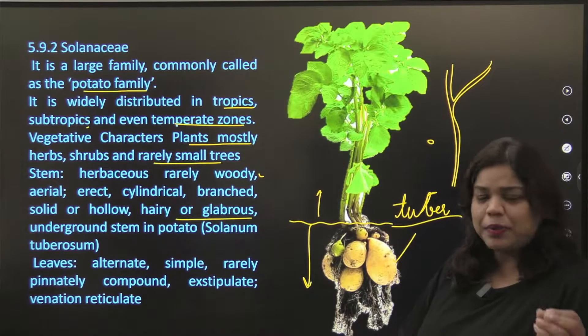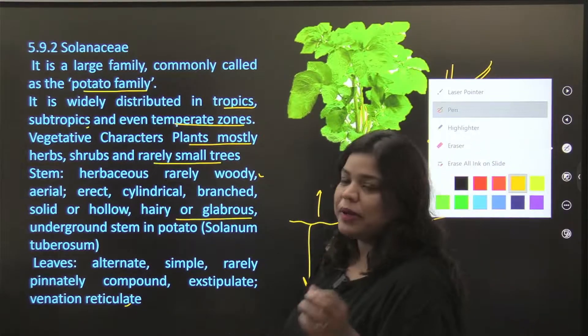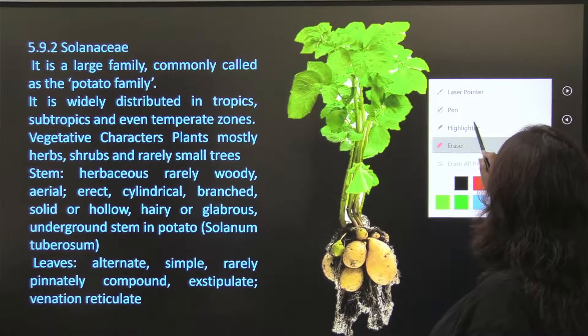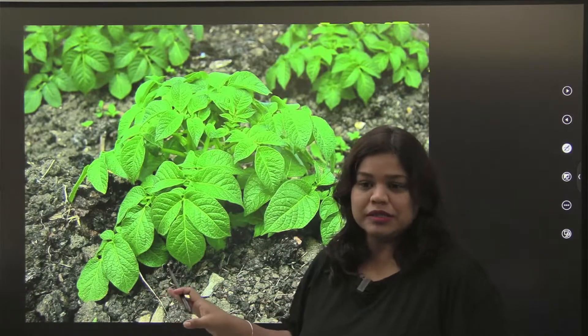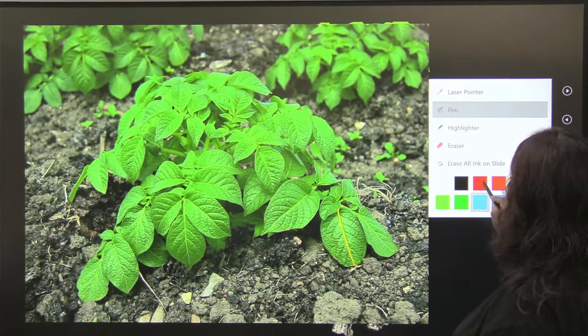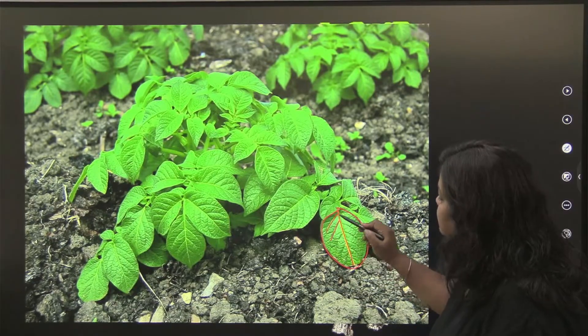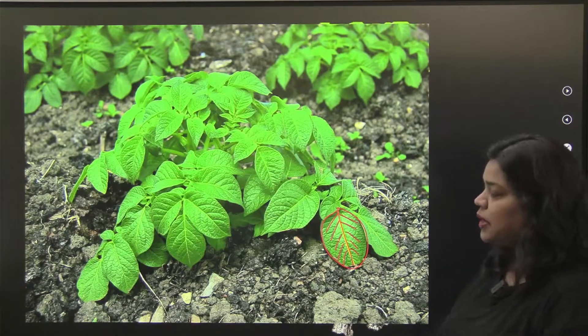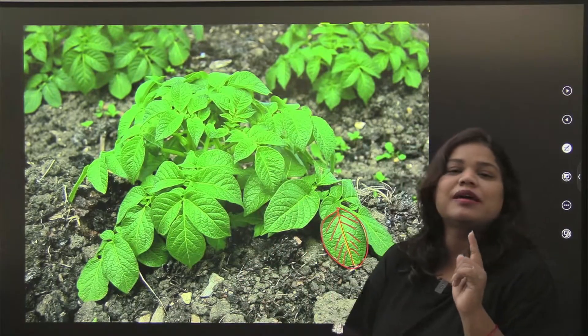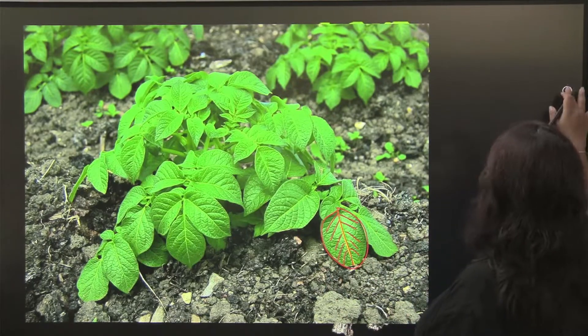Leaves alternate, simple, rarely pinnately compound, exstipulate. Venation is your reticulate. So if we talk about veins, what is it? Reticulate is pinnately compound rarely. Simple is very much. If you can see here, this is a potato plant. If you can see leaves, from this way, simple. You don't see incisions. Plus it is reticulate venation, networks of leaves. Simple, rarely pinnately compound. What is pinnately compound? Comment and tell us. If you are reading, I will tell you that you have started studying so I can take it further. So this is rarely pinnately compound.